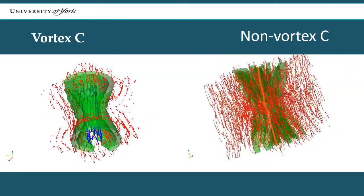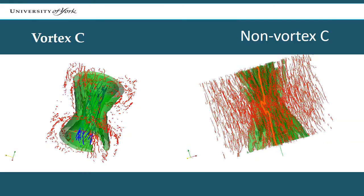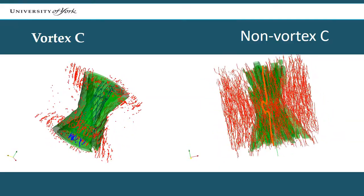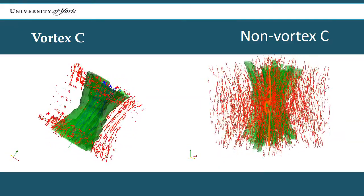The non-vortex C-shape on the right hand, however, lacks this group of self-reinforcing vortices. This means away from focus the C-shape breaks up during propagation.